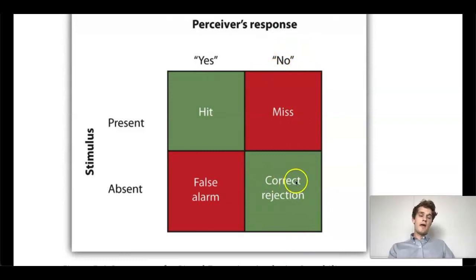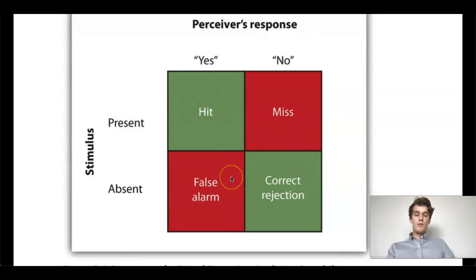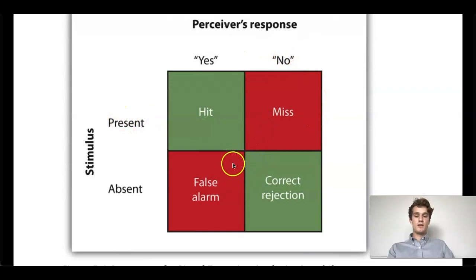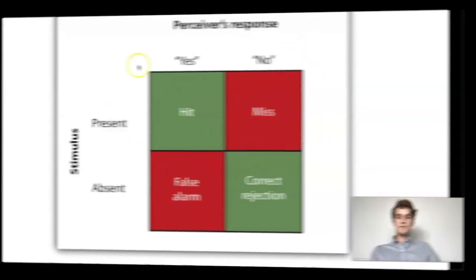Where the MCAT likes to test you are on these two blocks right here. They will classify it as a false alarm if you perceive a stimulus that wasn't there, and they'll classify it as a miss if the signal is present but you don't perceive their response. Remember these two responses: false alarm and miss.